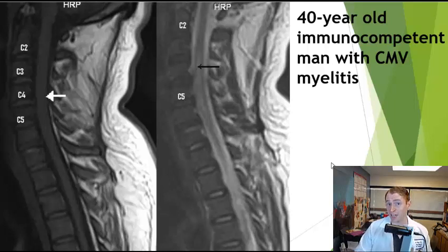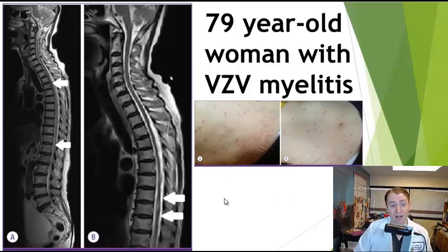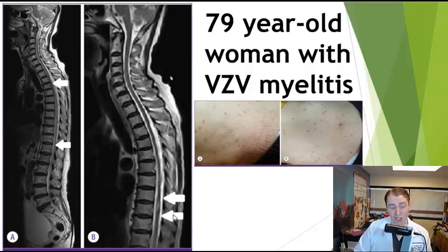If myelitis is caused by infection, it can be treated with antibiotics or antiviral agents, sometimes with steroids given at the same time to reduce inflammation. This is a 40-year-old man with transverse myelitis due to CMV (cytomegalovirus) — unusually, a healthy man with a normal immune system. This is a 79-year-old woman with varicella myelitis, often associated with shingles rash, and sometimes presenting as myeloradiculitis with inflammation of the lumbar nerve roots at the same time.